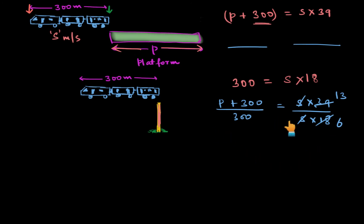Now let's solve it further. We can cross multiply. So 6 times P plus 300 would be equal to 13 times 300. 6 times P. Now let's multiply 6 with P and 6 with 300. So 6P plus 1800 is equal to 13, 3s are 39 and double 0, 3900. This gives us 6P is equal to 3900 minus 1800, which is equal to 2100.